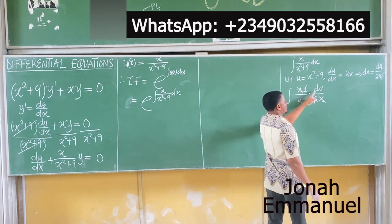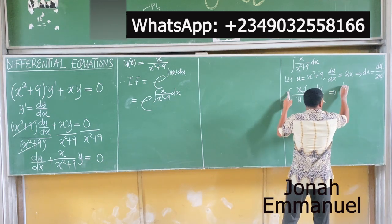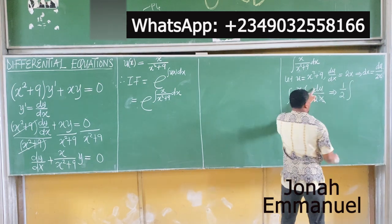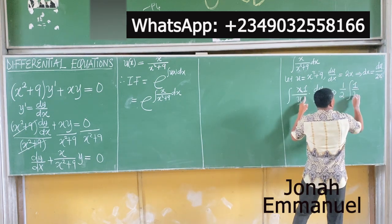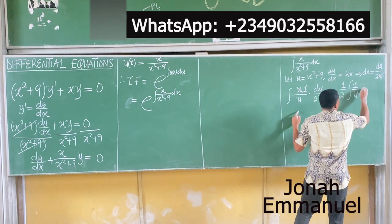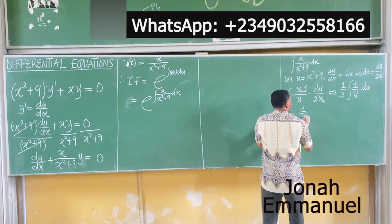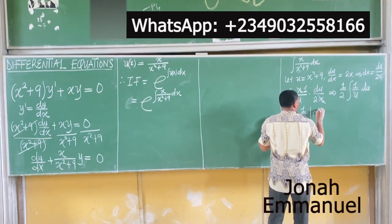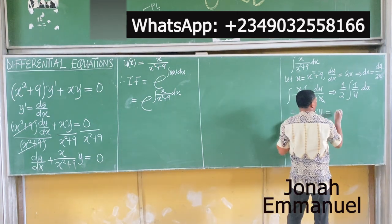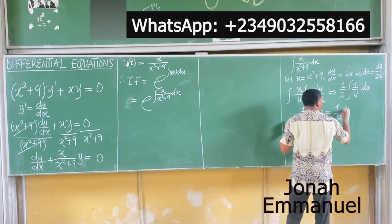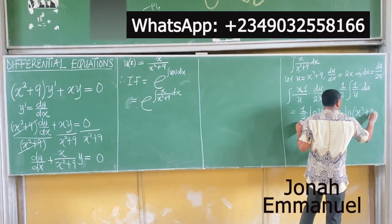You've done this over and over again, so let me save myself the stress. That gives you 1 over 2, which goes outside. You have the integral of 1 over u du, which gives you 1 over 2 times ln u. And that equals 1 over 2 times ln of x squared plus 9.